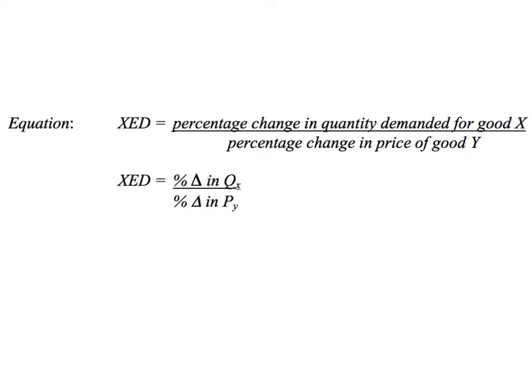The equation for ZED, or cross elasticity of demand, is the percentage change in the quantity demanded of good X over the percentage change in the price of good Y. The assumption is that your product is good X. So, for example, the percentage change in the quantity demanded for Coca-Cola over the percentage change in the price of Pepsi-Cola. That is the basic equation, and you should know that by now.